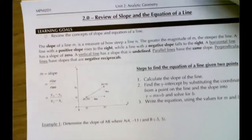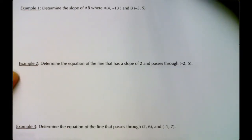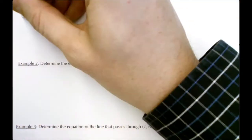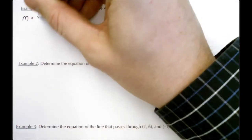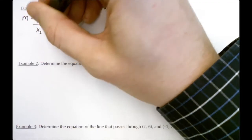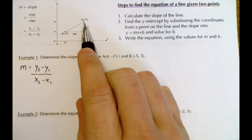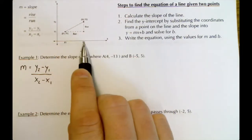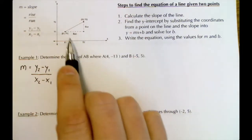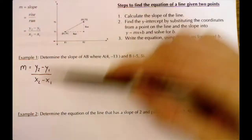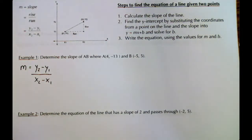First, let's review how to find the slope of a line given two points. That's Example 1: determine the slope of AB where point A is (4, -13) and B is (-5, 5). The slope formula is m = (y2 - y1) / (x2 - x1). Looking at a graph, x1 and x2 describe the two x values and their difference is the run, while the difference in y values gives the rise. So really this is just rise over run.